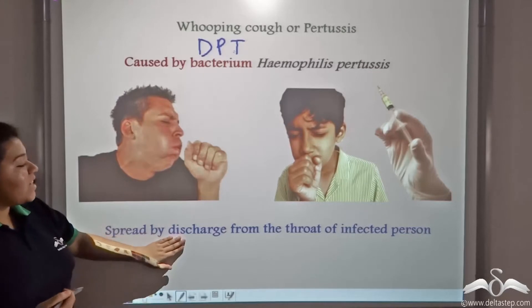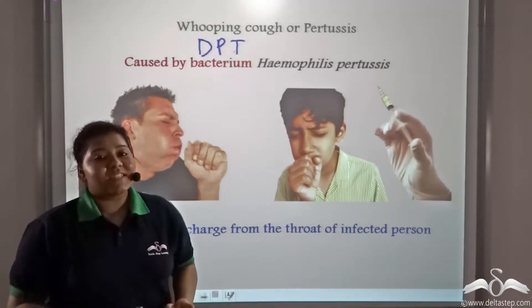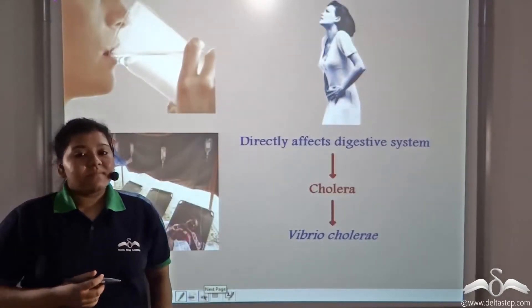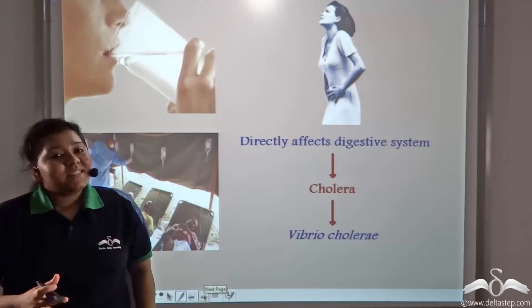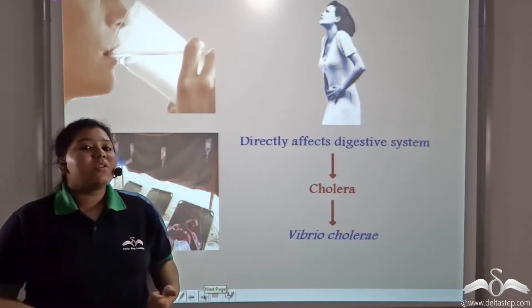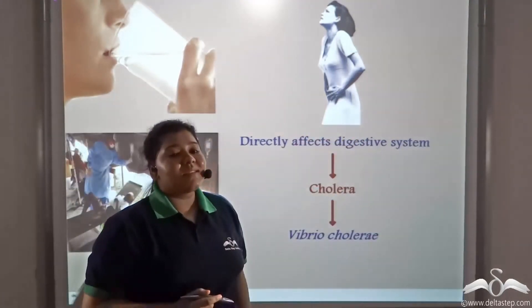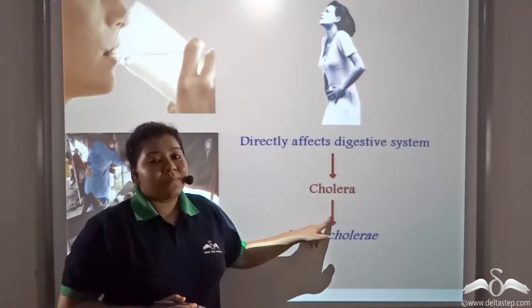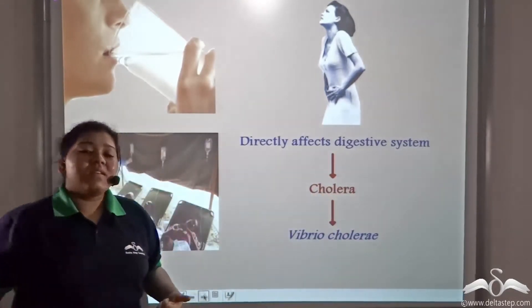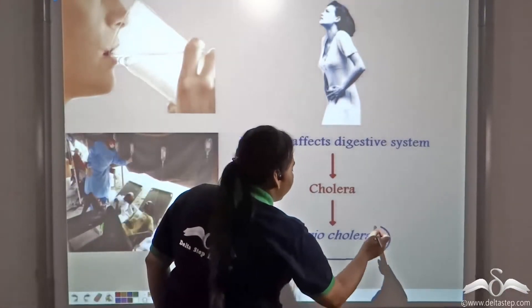This bacteria can spread by the discharge from the throat of the infected person. Bacteria can be waterborne also. These waterborne bacteria directly affect the digestive system, causing cholera. Cholera is caused by a specific bacterium known as Vibrio cholerae.